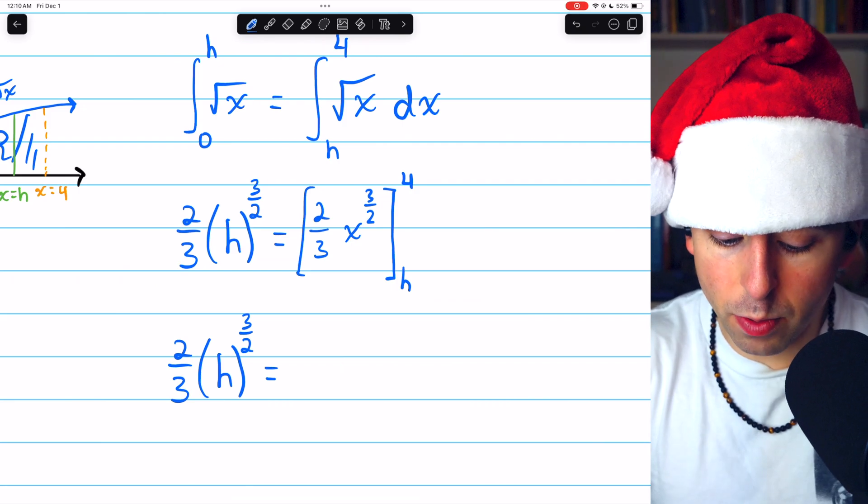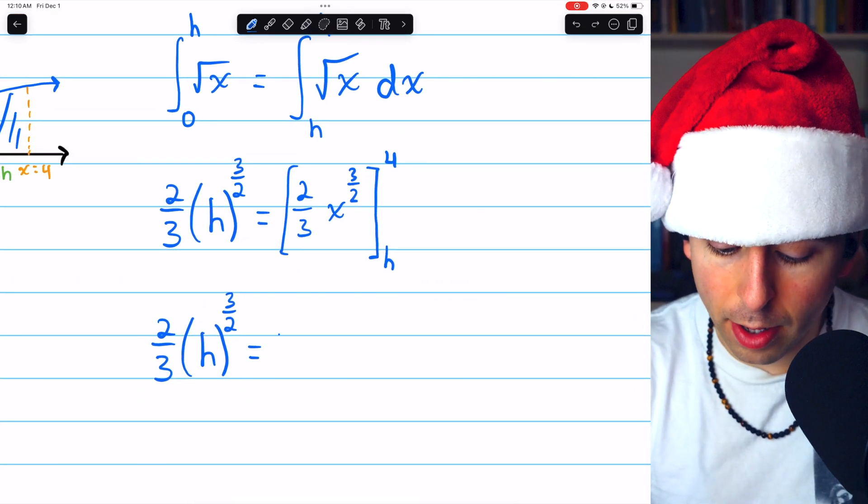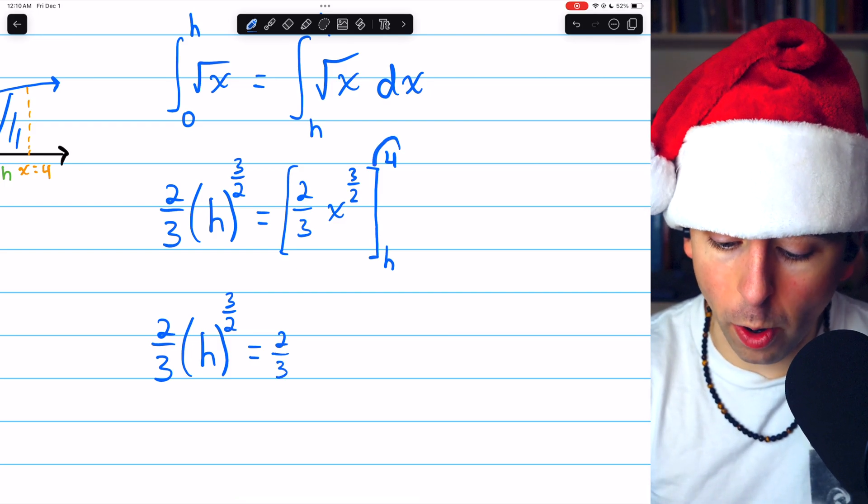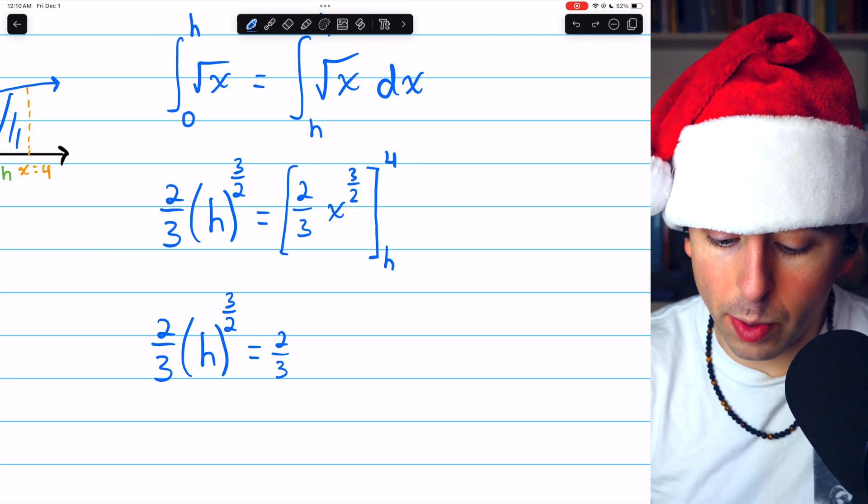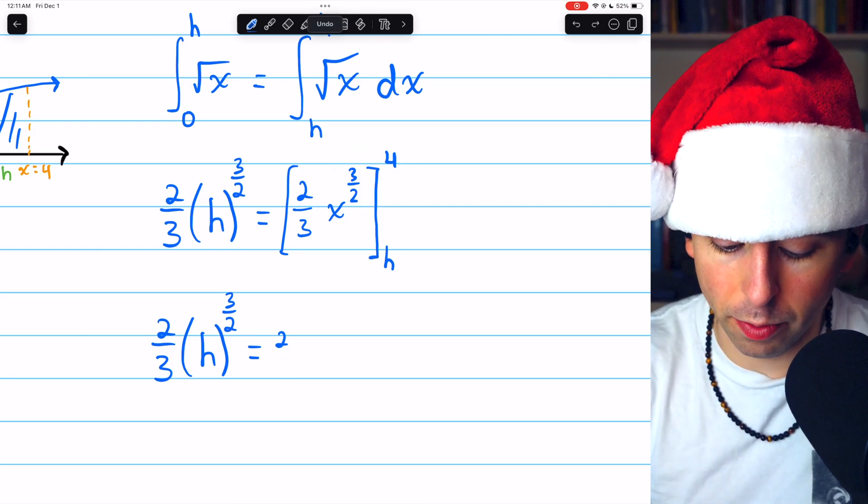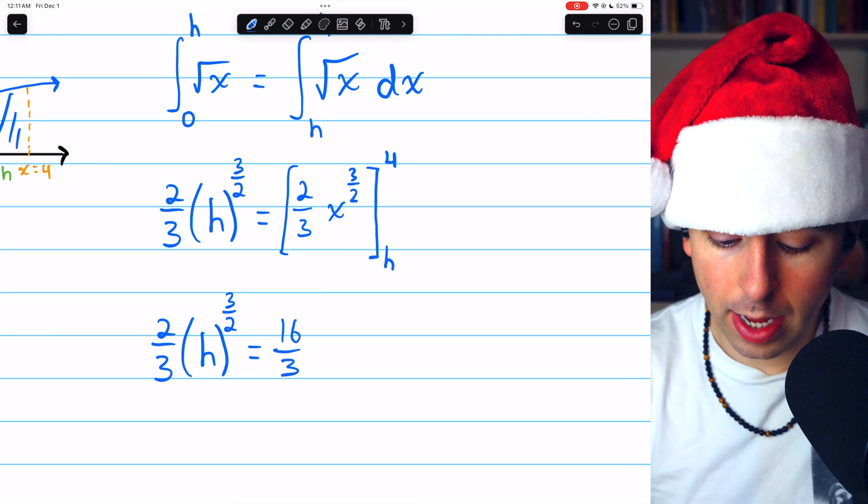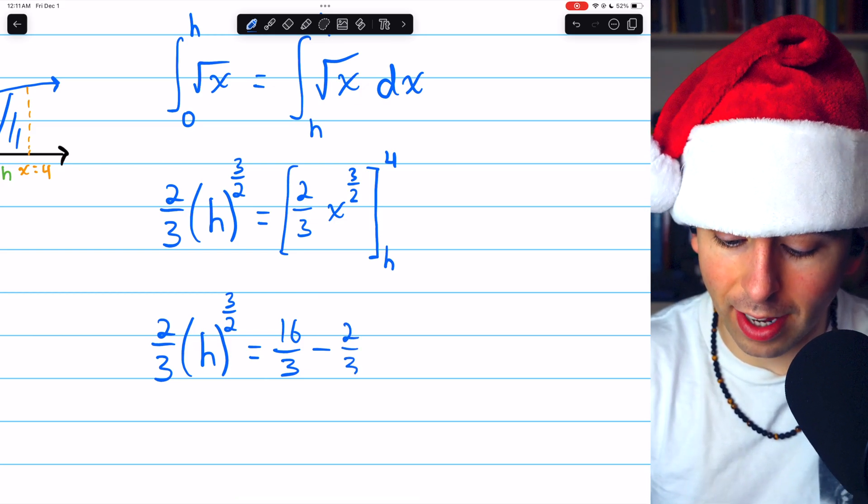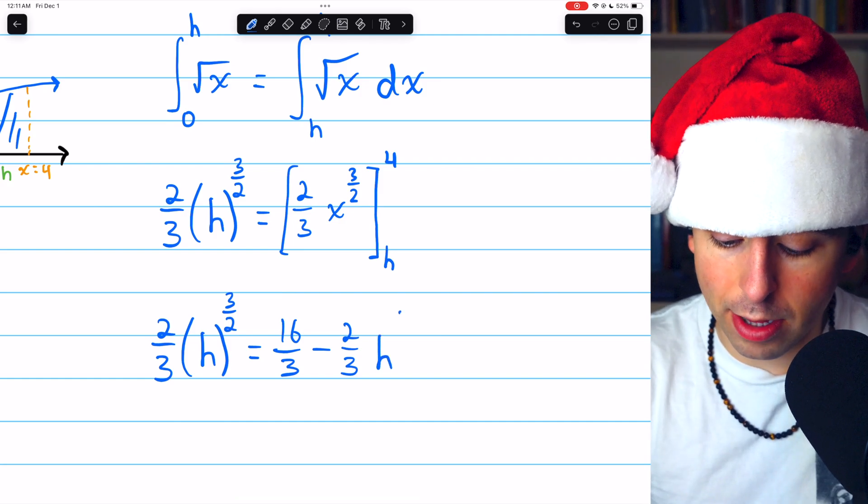Now on the left, we have 2 thirds H to the 3 halves. And then evaluating the right side, first we plug in the upper limit. And we already saw before that when we plug 4 into this integral, what we get is 16 over 3. So I'm just going to write that as 16 over 3. And then we subtract plugging in the lower limit, which in this case is H. So minus 2 thirds times H to the 3 halves.